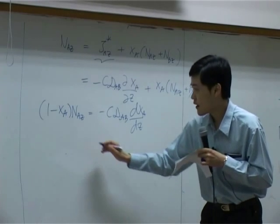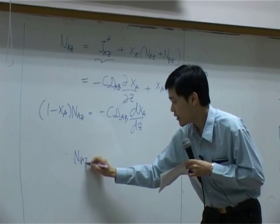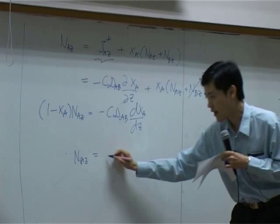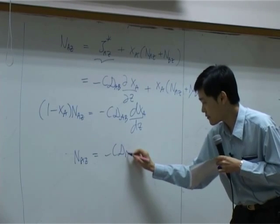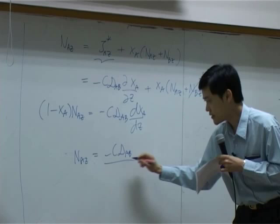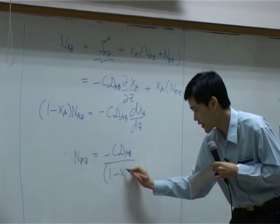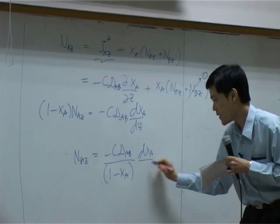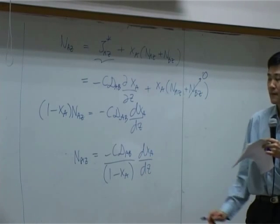From here, I'm going to bring 1 minus xA to the right hand side. So you get minus z dAb, 1 over 1 minus xA, dxA by dz.